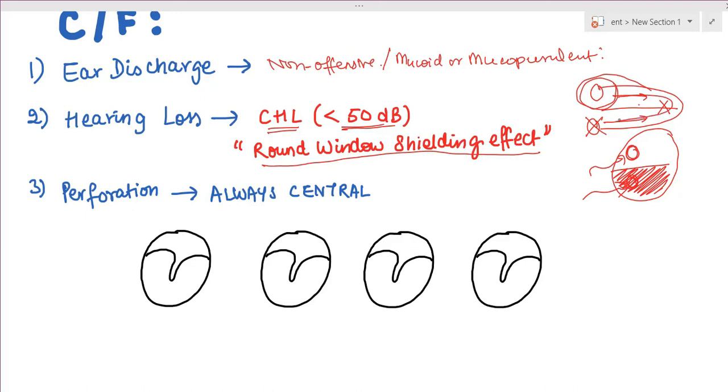As mentioned, perforation is always central. There are different types of central perforations: anterior perforation where the perforation is anterior to the handle of malleus, medium-sized central perforation, and posterior perforation if the perforation is posterior to the handle of malleus.